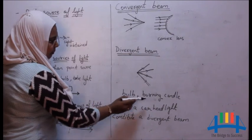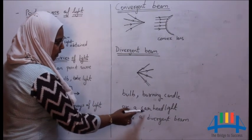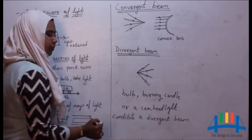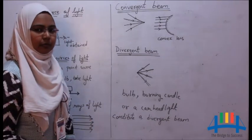Example: bulb, burning candle, or a car headlight constitute a divergent beam of light. By this, we end our topic, light.